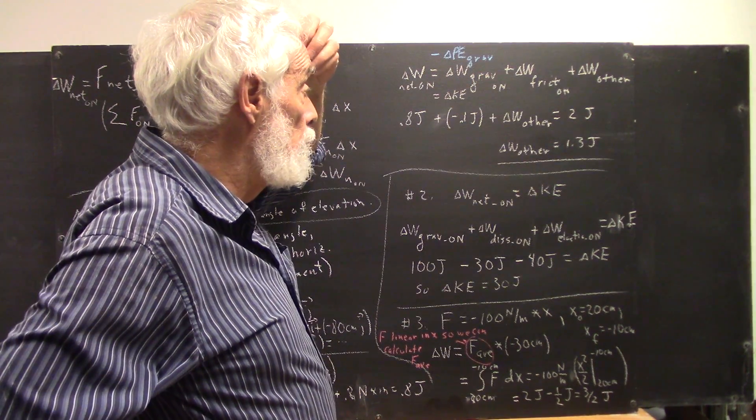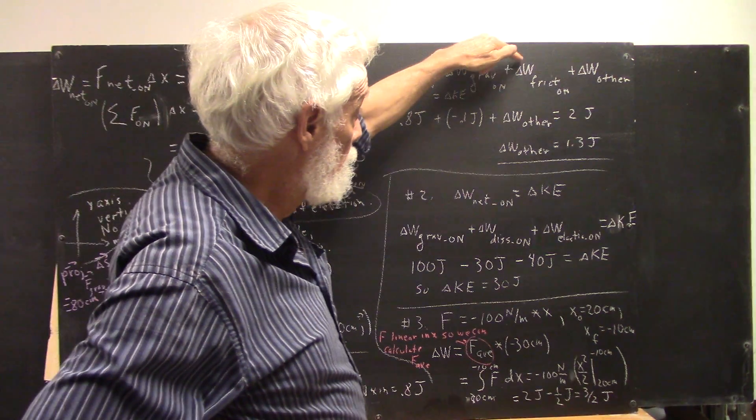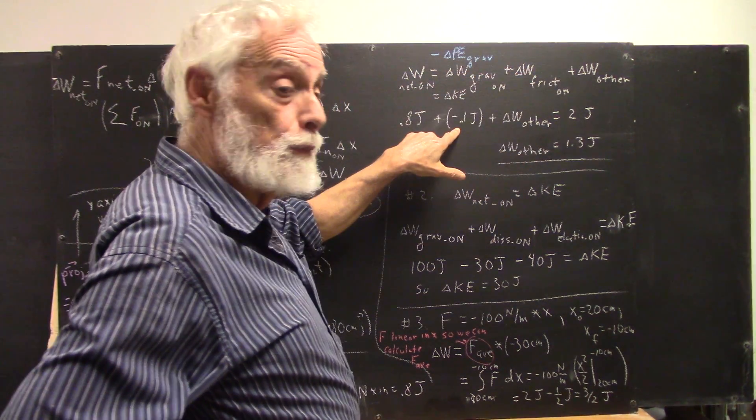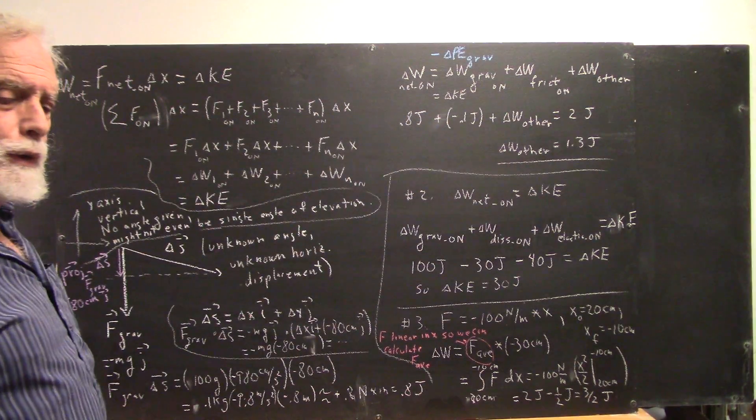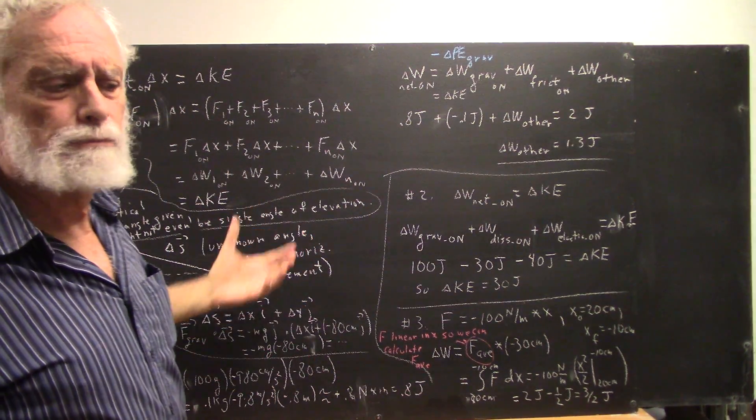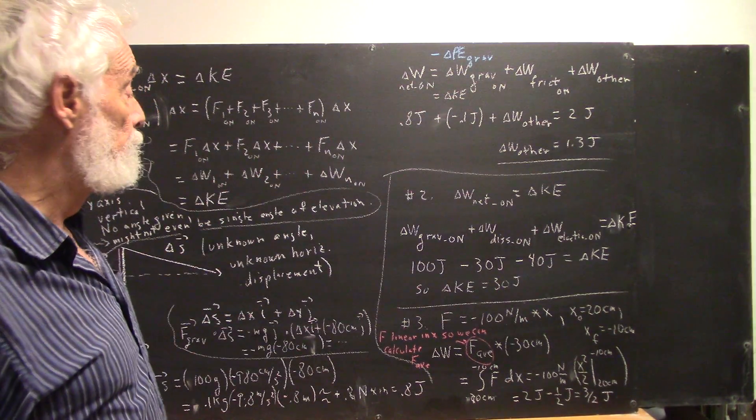I tell you also, in the problem, that friction does negative 0.1 joule of work on the object. And the ultimate question then was, how much work is done by the other forces?